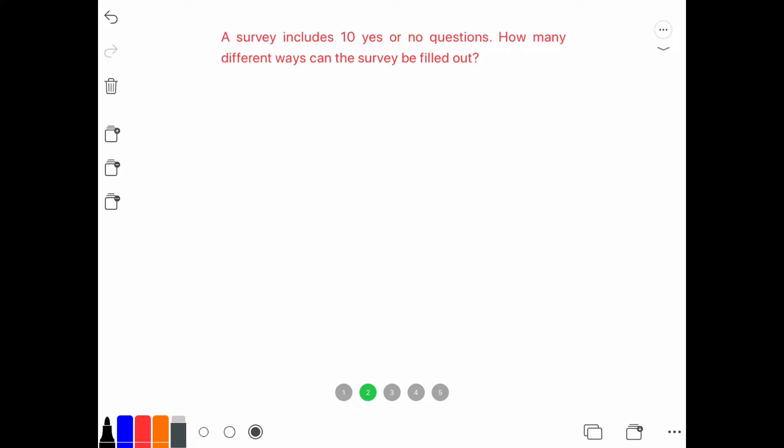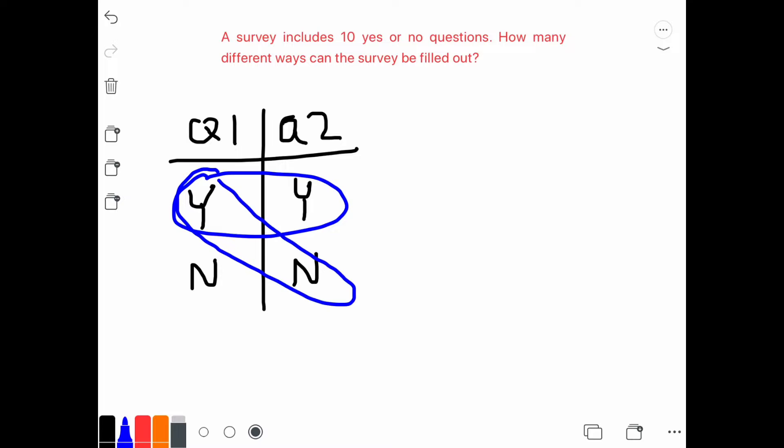Now if we have two questions, there are two outcomes, yes and no, for both of the questions. And we repeat the number of outcomes, two, because there is a yes and no in question two. So we have two times two equals four cases.